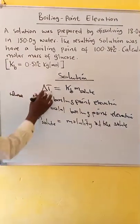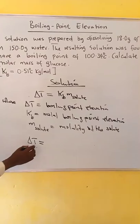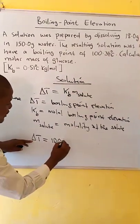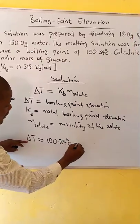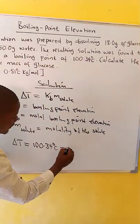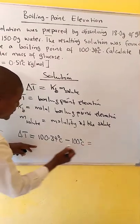Delta T: in this case, we first calculate the delta T. The boiling point of the solution is 100.34 degrees Celsius, and that of the solvent, the boiling point of water, is 100 degrees Celsius. The difference is 0.34 degrees Celsius.